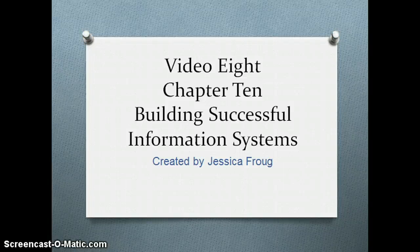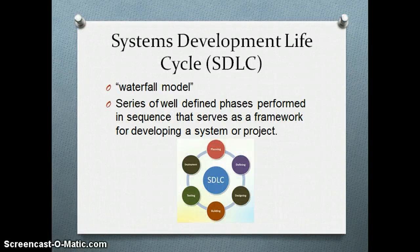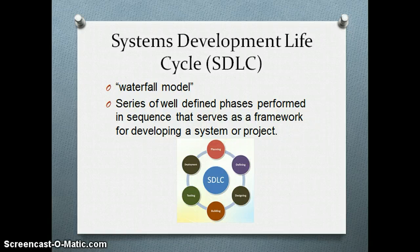Chapter 10 is about how to build successful information systems. To achieve integration, designers of the information system follow the system development life cycle, which is a series of well-defined phases performed in a sequence that serves as a framework for developing a system project.